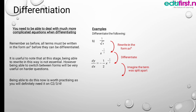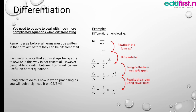Now, imagine the term is split apart. dy/dx equals minus one half, that is minus 1 over 2, times x to the power minus 3 over 2. Rewriting using the power rule, dy/dx equals minus 1 over 2 times 1 over the square root of x cubed. Grouping the function in fraction form, we have dy/dx equals minus 1 over 2 times the square root of x cubed.